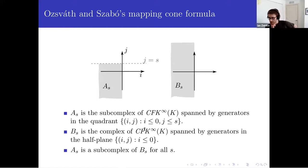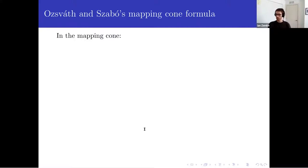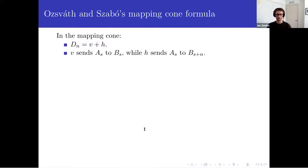One important thing: A sub S is a subcomplex of B sub S, so there's an inclusion map. If you have a subcomplex, you can make that functorial by saying there's a map from one to the other, which is the inclusion. The differential D sub N is a sum of two maps. V is the inclusion of A sub S to B sub S. There's another map H, which sends A sub S to B sub S plus N, where N is the surgery coefficient.